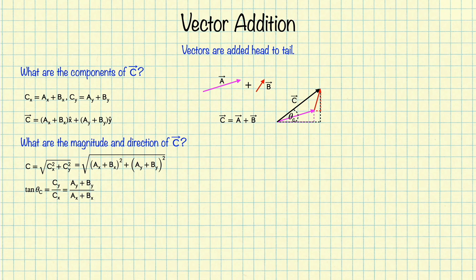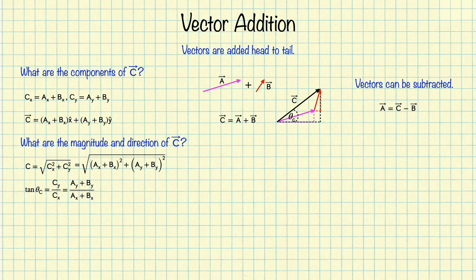If we can add vectors, we can also subtract vectors. Taking the expression c equals a plus b and rearranging, we get that a equals c minus b. What does it mean to subtract a vector? It means that you run backwards along the arrow. So a, the pink vector, is equivalent to running along c and then running backwards along b. Algebraically, when you subtract a vector, you just stick a negative sign in front of all of its components.